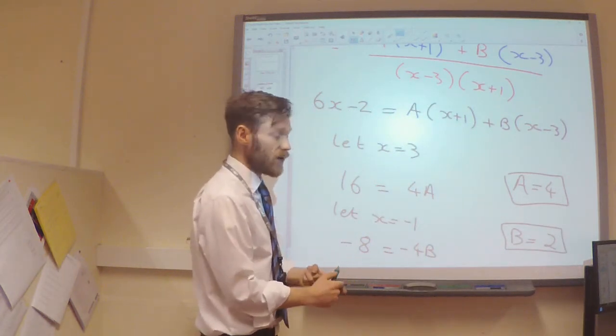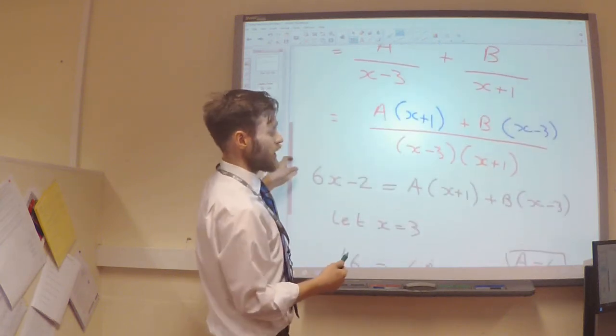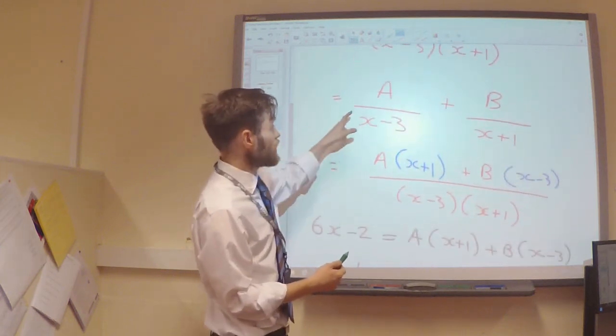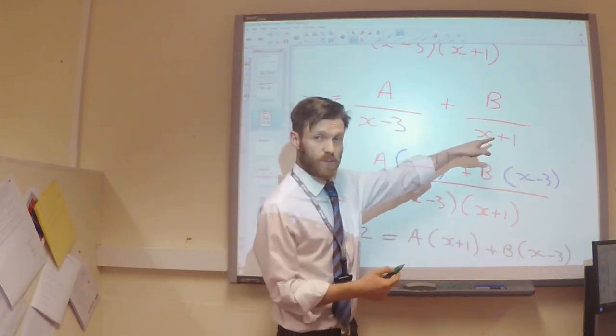So I know A, I know B. So, now I can go back to the way I wrote the question out in the first place, which was the A over x minus 3 plus B over x plus 1.